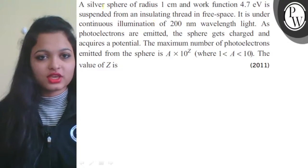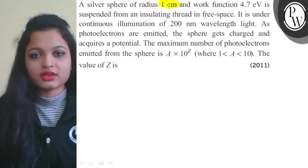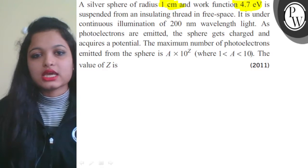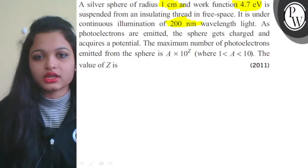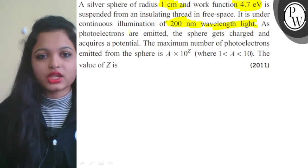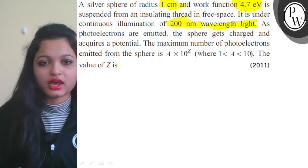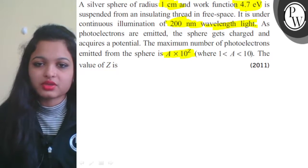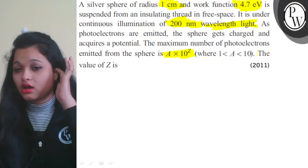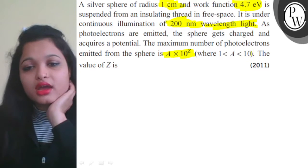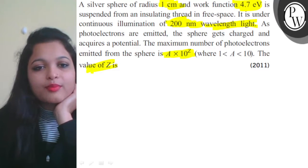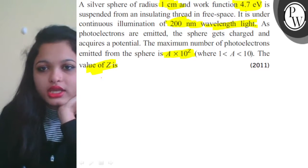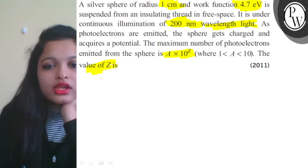Let us read this given question. A silver sphere of radius 1 centimeter and work function 4.7 eV is suspended from an insulating thread in free space. It is under continuous illumination of 200 nanometer wavelength of light. As the photoelectrons are emitted, the sphere takes charge and acquires a potential. The maximum number of photoelectrons emitted from the sphere is a × 10^z, where 1 < a < 10. We have to find the value of z. Data given: radius, work function, and wavelength.